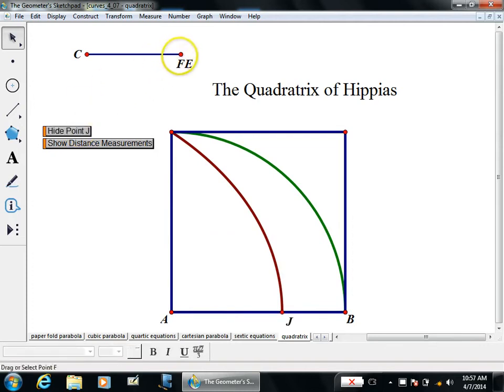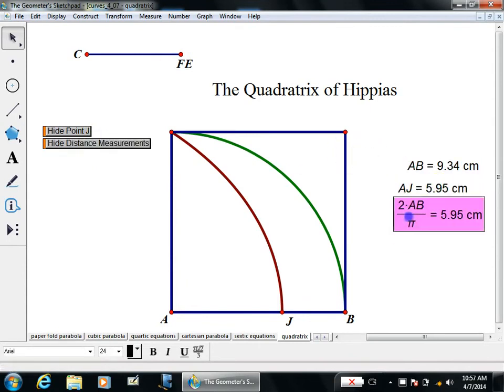The problem with point J, and what's important about point J, is that it turns out that it's always equal to two times the radius of this quarter circle divided by π. Now that's great, and having a line segment that has π as part of its definition allows you to square the circle.